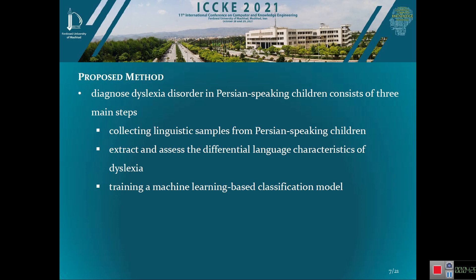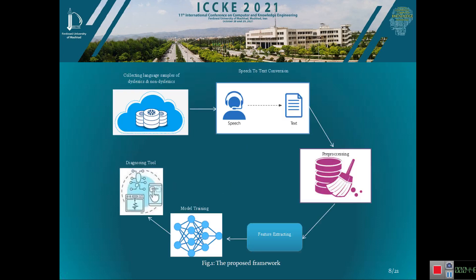Now it's time to explain the proposed method. Diagnosing dyslexia disorder in patient-speaking children consists of three main steps: first, collecting linguistic samples from patient-speaking children; second, extracting and assessing the differential language characteristics of dyslexia; and third, training a machine learning-based classification model. The proposed framework is shown here. As you see in the picture, the steps are: collecting language samples via retelling, transcription, preprocessing text samples, feature extraction, and finally training and building machine learning models to screen dyslexic children.